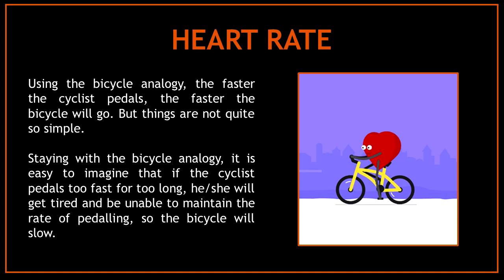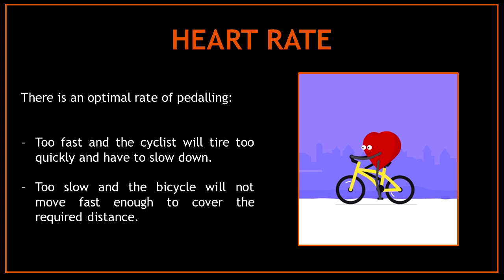The faster the cyclist pedals, the faster the bicycle will go. But things are not always so simple. If the cyclist pedals too fast for too long, he or she will get tired and be unable to maintain the rate of pedaling, so the bicycle will slow. There is an optimal rate of pedaling: too fast and the cyclist will tire too quickly; too slow and the bicycle won't move fast enough.